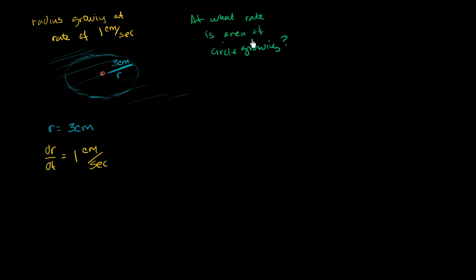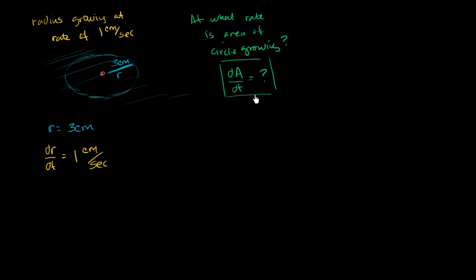What do we need to figure out? They ask: at what rate is the area of the circle growing? So we need to find dA/dt. What might be useful is if we come up with a relationship between the area of the circle and the radius of the circle, and then take the derivative with respect to time.